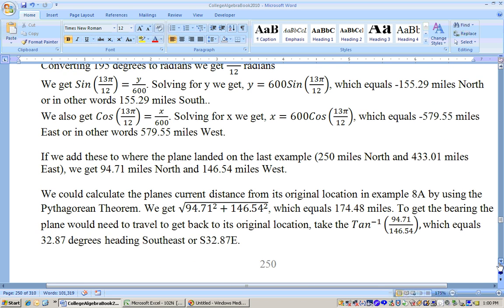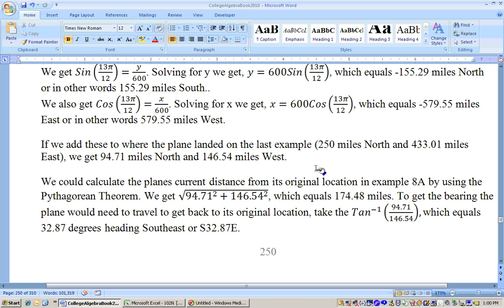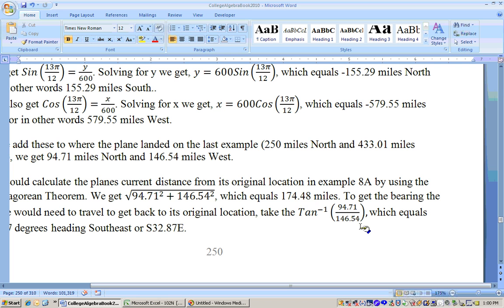Now, if you add the east and south and west to the north and west that it went before, see, 250 miles north, 433 miles east to the answer we already just got right here, then you get that it's this many miles north and this many miles west of where it took off from. To get its distance, use the Pythagorean theorem, and you get that it's 174.48 miles from its original location. And to get its bearing it would need to take to get back to its original airport that it took off from, you would take the inverse tangent of these values that it has left to go, the east and the west or the north and the west. And that will do it.